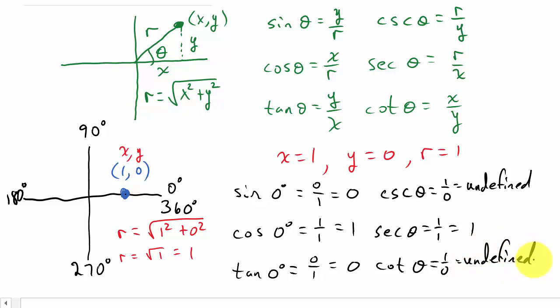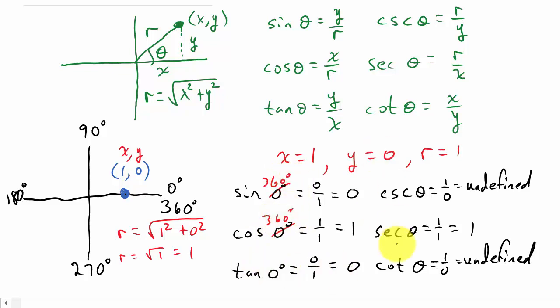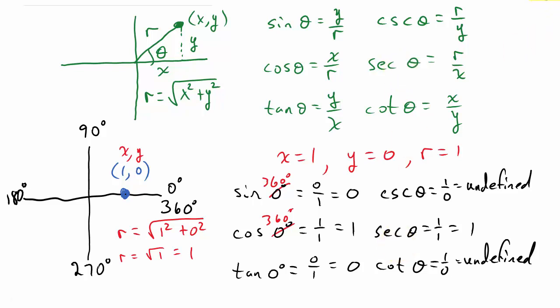So there are the values of the trig functions for 0 degrees. Now I'm not going to go through and do 360, because the point would be the same spot — here's 360 — we would still pick the point (1, 0). So they're exactly the same. You could actually just copy all of these again and just change the 0 degrees to 360 degrees on all of them. I hope this helped — check out my other videos, give me a like, share, and subscribe. Thanks for watching.